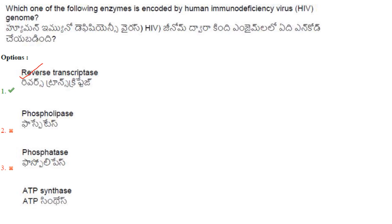Which enzyme is encoded by the human immunodeficiency virus genome? HIV is a retrovirus and it encodes reverse transcriptase. So the answer is option 1: reverse transcriptase.